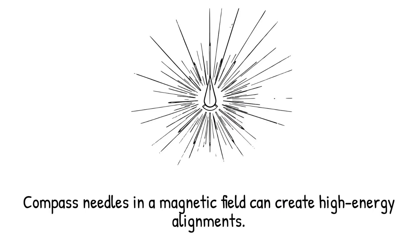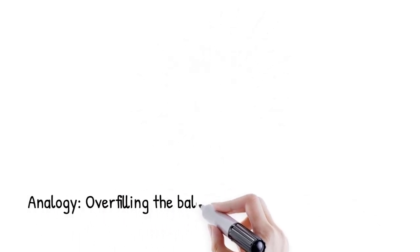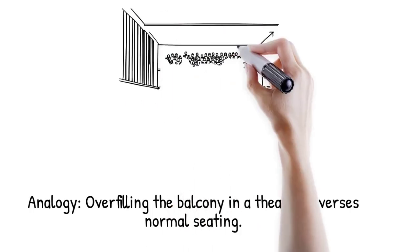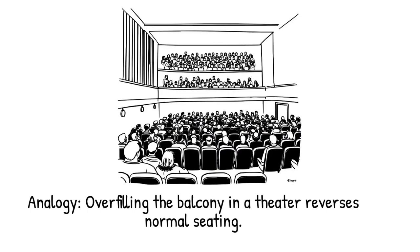A collection of tiny compass needles in a strong magnetic field can be flipped so nearly all point uphill against the field, creating more high-energy alignments than low, like seating more people in the balcony than the orchestra seats of a theater, an inverted arrangement that defies the usual pattern of filling from the front.